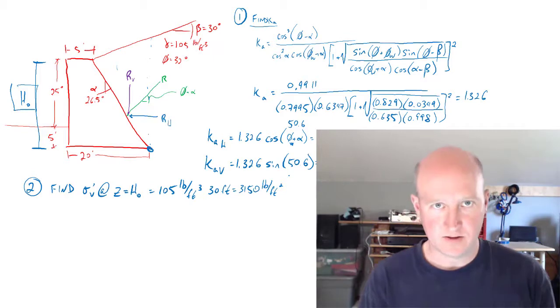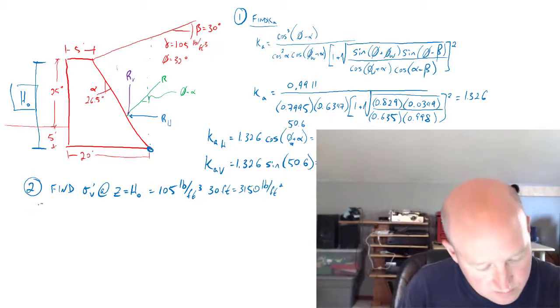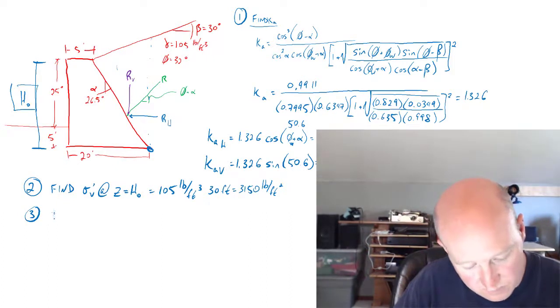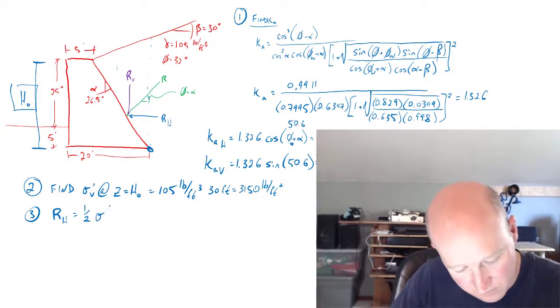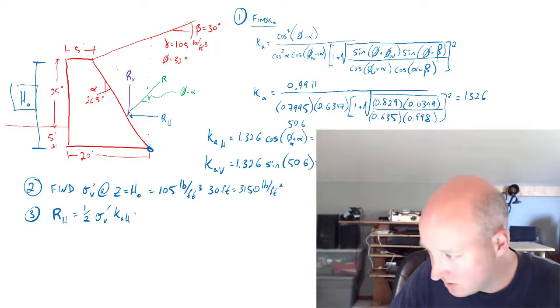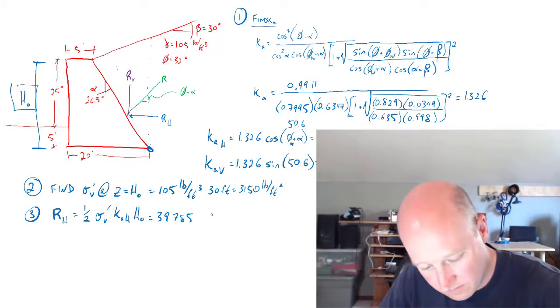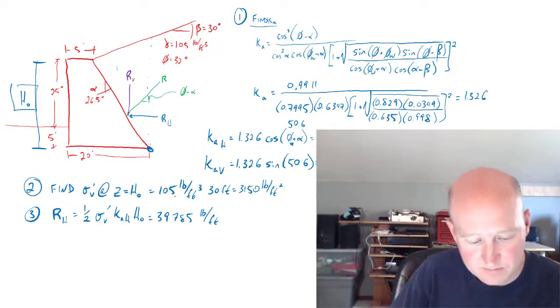And then we're going to use that to find the resultants. So let's find the resultants. So one half base times height. So here's the vertical stress times k_a_h times h naught. And that's pounds per foot of wall.